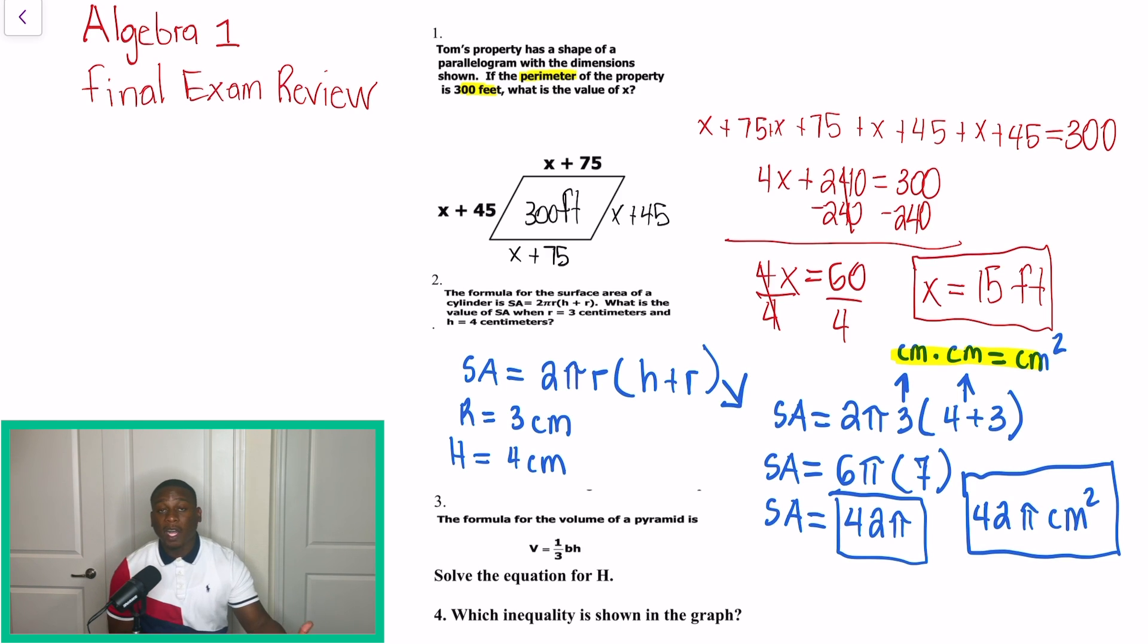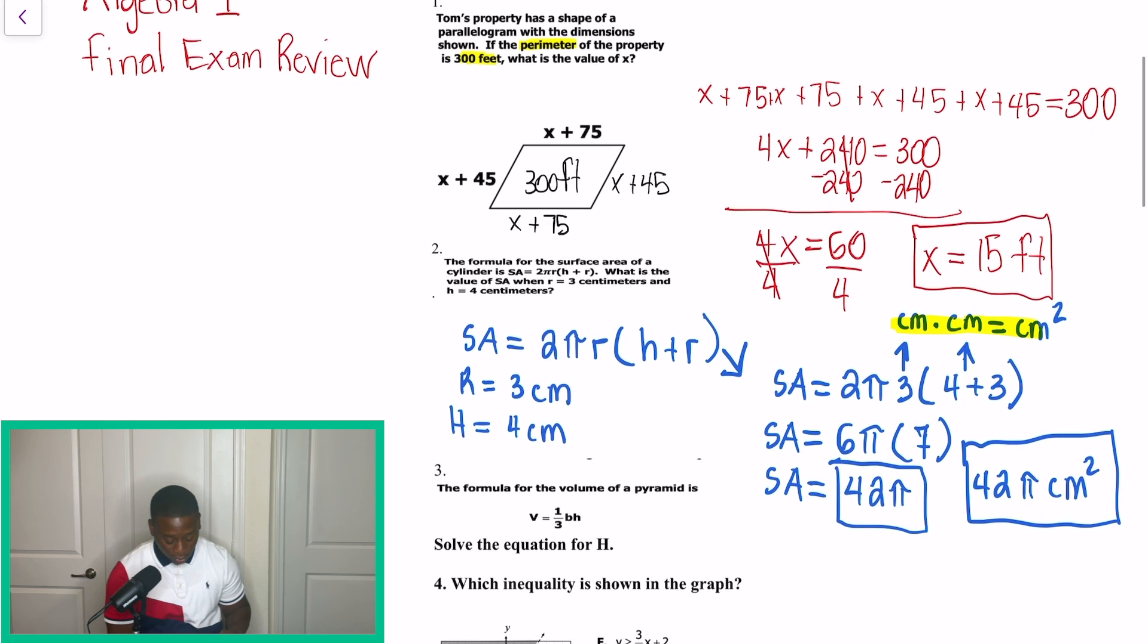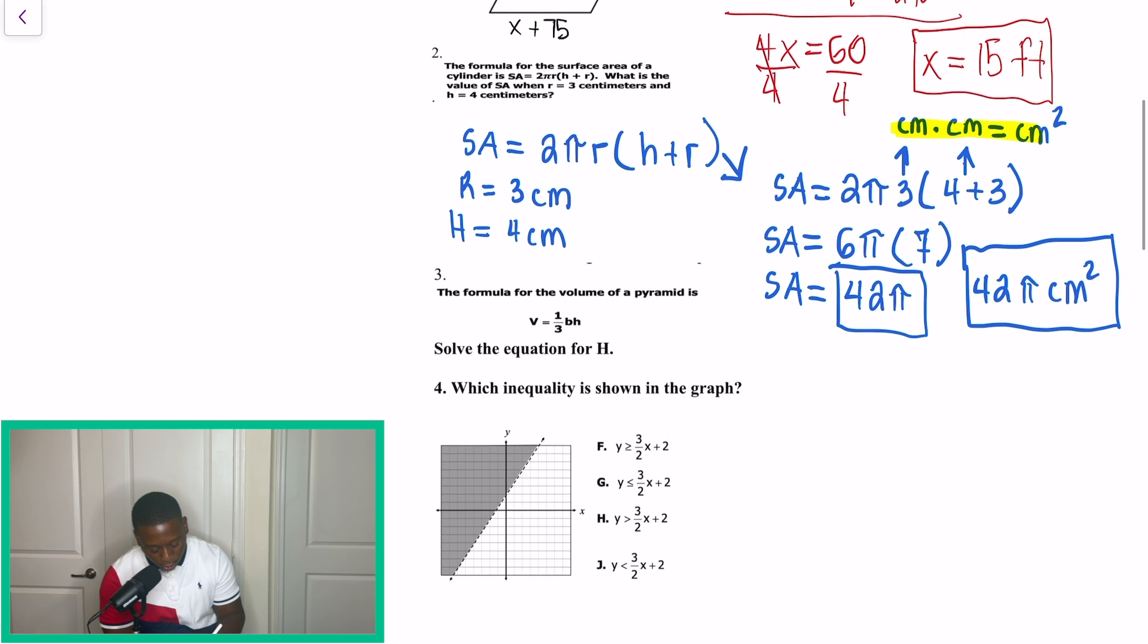So in our next problem for the algebra review, we're going to be talking about rearranging formulas. So the equation right here is for volume. Volume is equal to, and it's volume of a pyramid, I should say, one-third base times height. And now what they're asking us to do is to solve for H. So they want us to rearrange this equation for it to say H is equal to. So we're getting H by itself, kind of like how V is right now. So to do this, it's very similar to solving equations.